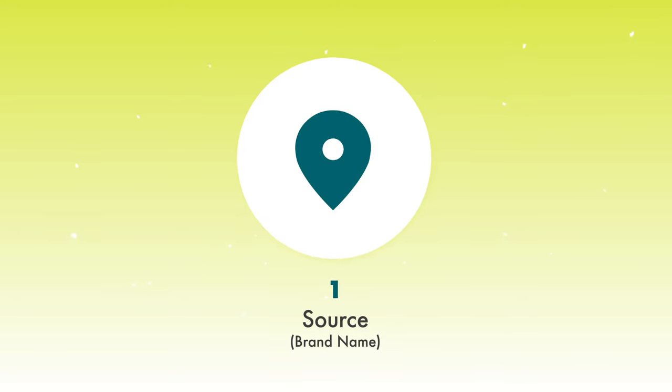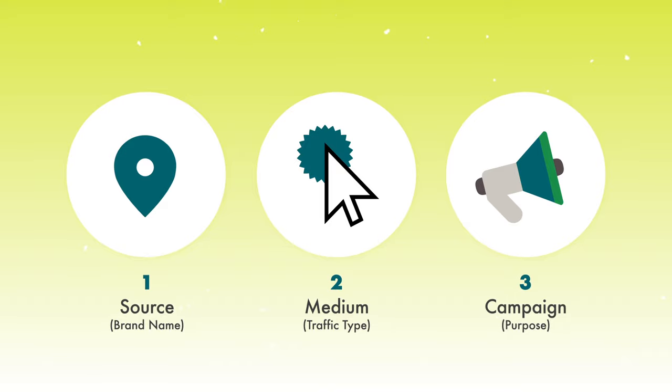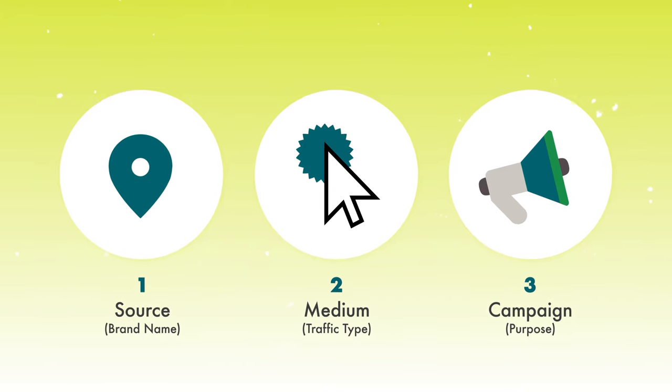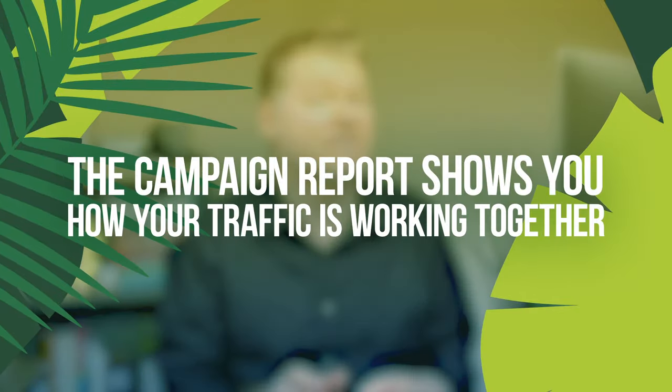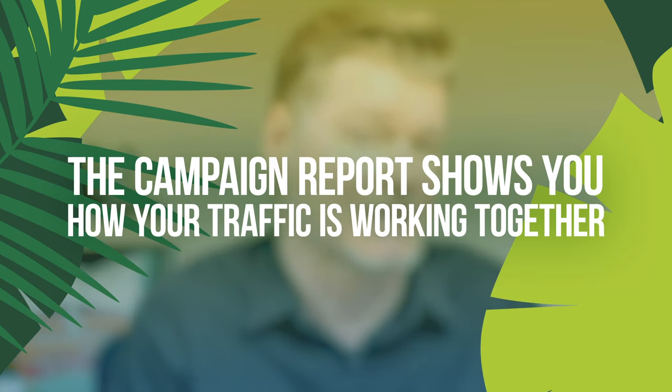So now you have an understanding of the source/medium report: you'll have organic traffic, direct/none traffic, and referral traffic. But you're probably not going to see email traffic, and you're probably not going to see podcast traffic. The reason is because you haven't used UTMs to identify those traffic types. There is one other report to look at — remember we talked about three things Google Analytics uses: source, medium, and the purpose of the traffic, which is called the campaign.